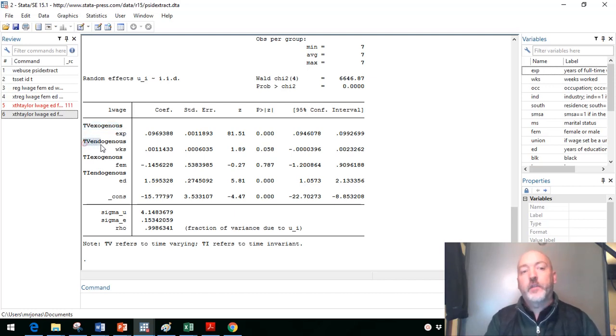So our time varying TV exogenous variable, work experience. Time varying endogenous, number of weeks. Time invariant, or TI exogenous, female dummy variable. TI endogenous, education. So when you see this output, a lot went into it behind the scenes. It's random effects. It's the fixed effects transformation to get the IVs to do instrumental variables. So now, if we made those choices correctly, we should now have unbiased, consistent estimation of each of these panel marginal effects.